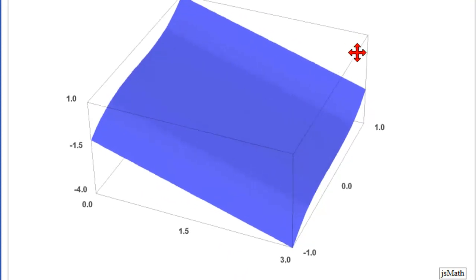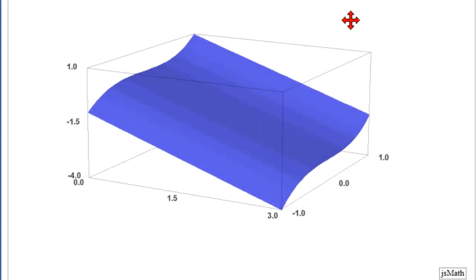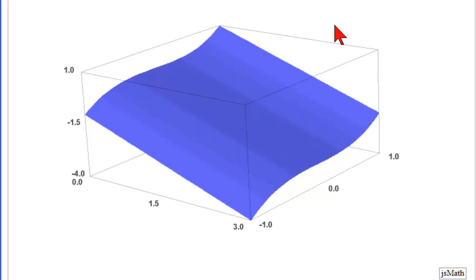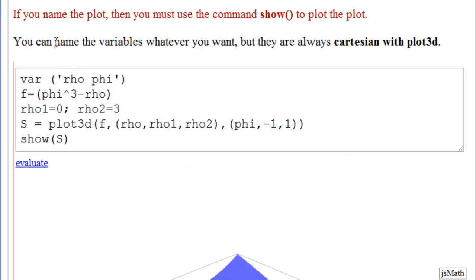When you want it to revert, just evaluate it again. Next plot. Our second plot, and it shows you how to use the command show. It says if you name the plot, then you must use the command show in order to plot the plot. And also, you can name the variables whatever you want. But they are always Cartesian, rectangular, with plot 3d.